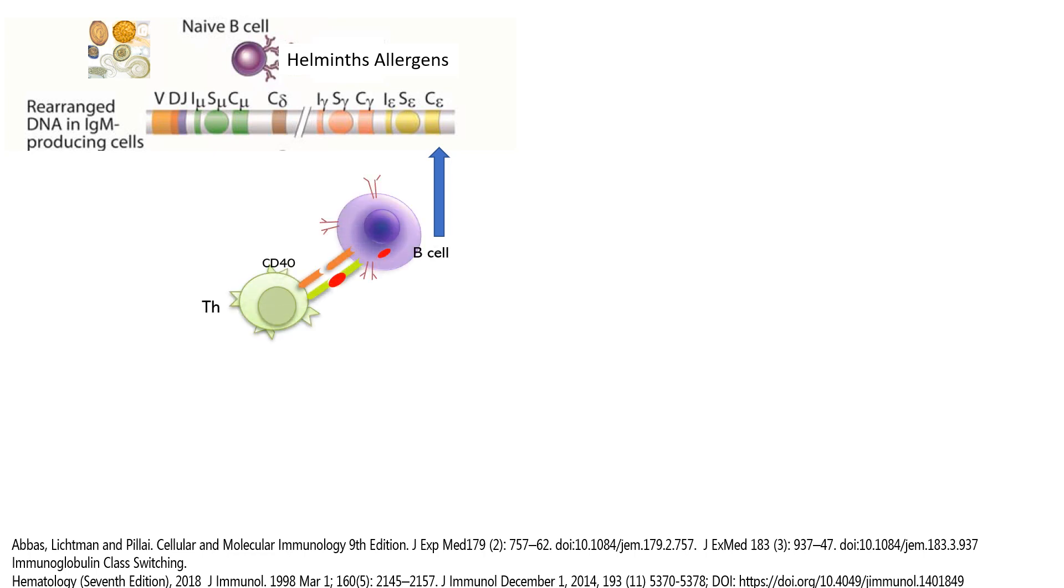What drives this switch to the IgE is precisely that contact with the helminth. That T cell epitope that is presented that it's helminth or allergen associated will signal to the B cell how to rearrange the gene. So we have a germline gene transcript eventually for IgE.